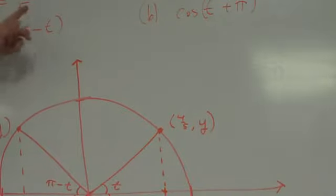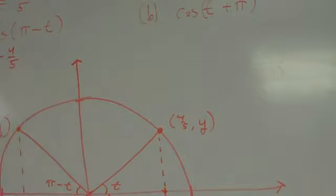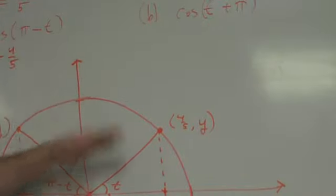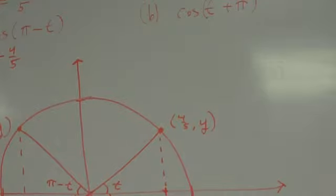So looking at this unit circle I've drawn with my rather ugly bow tie in the middle. If the cosine of t is four-fifths, what is the cosine of pi minus t? The cosine of pi minus t would be negative four-fifths. Because pi minus t is, as long as t is between zero and 90, pi minus t is always going to be the one in quadrant two. So that's always going to be where x is negative.